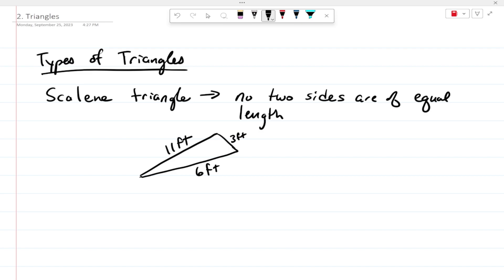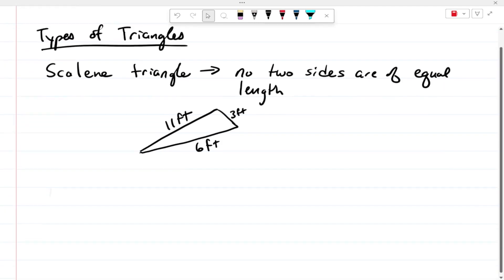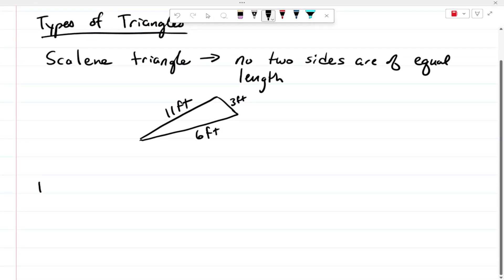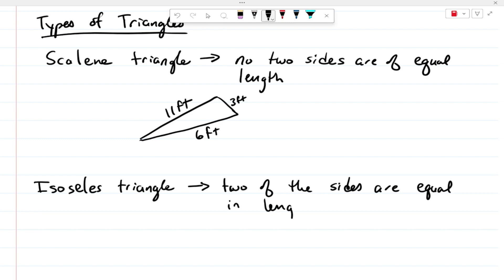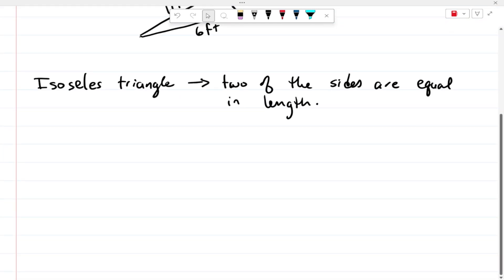Notice here no two sides are the same length. Now an isosceles triangle is one where two of the sides are equal in length. So that would be a situation like this, where this is ten feet, ten feet, and then five feet.